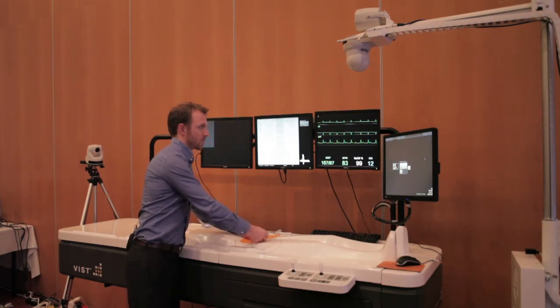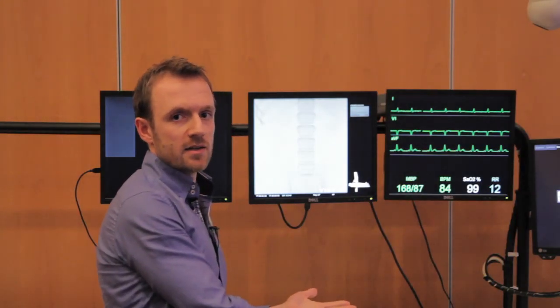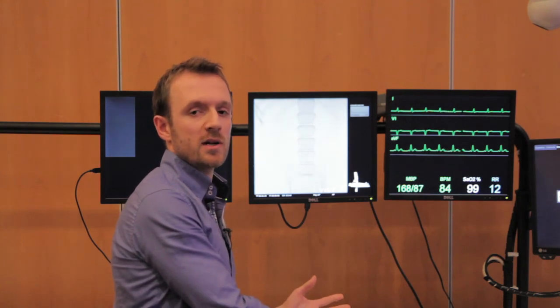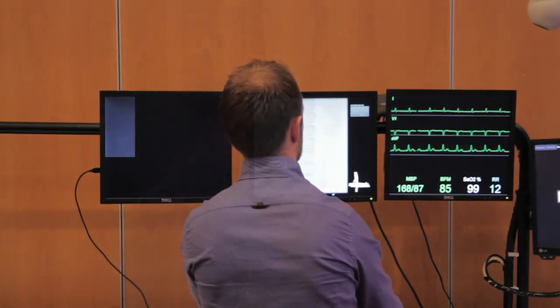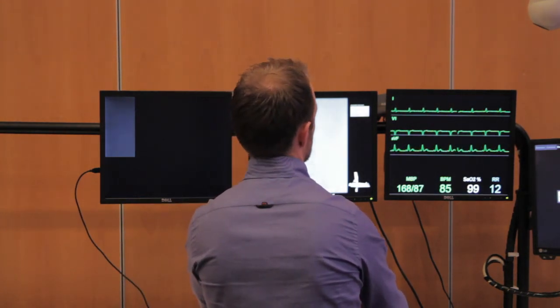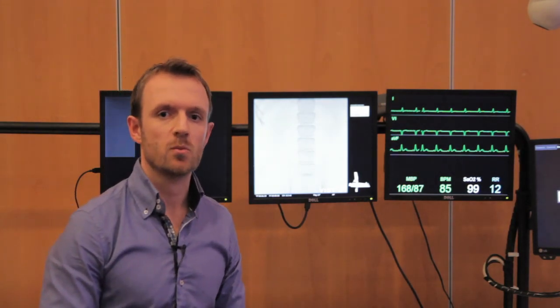The wire goes in. When the grayed out image of the device I've selected turns white, that's when we know it has been identified by the robot and we'll be able to continue performing the simulated procedure. So now that we see the device has turned white, now we know that it's been detected and we can start the procedure.